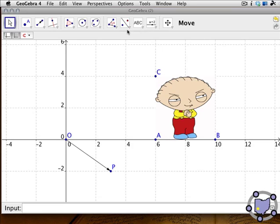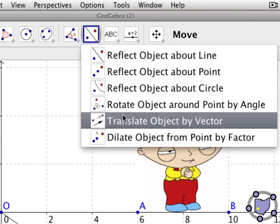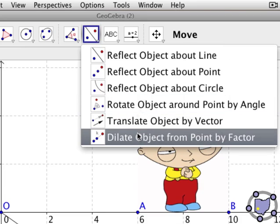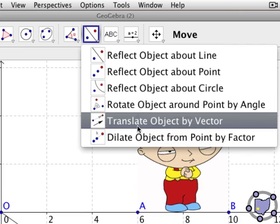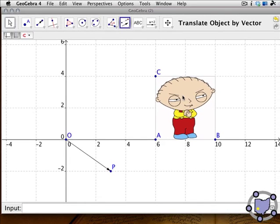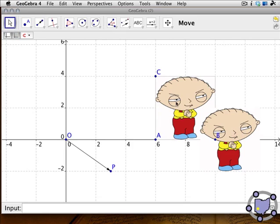What we're going to do is use this vector to translate Stewie. The transformation tools all appear underneath this button, by default the fourth button from the right. You'll notice there's an option that says Translate Object by Vector. There's also Rotate Object, which we'll look at in a bit, and Dilate Object, which is also very handy. We're going to translate an object by vector, so we pick this tool. We're going to click the object we want to translate, then we're going to click on the vector, the translation vector. And now we have two Stewies. This is the translated image of the pre-image here.